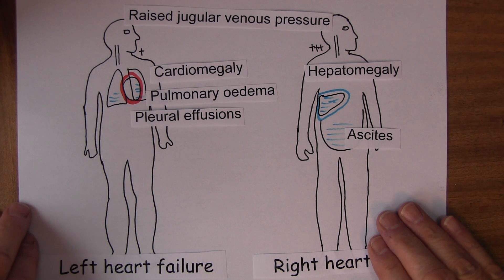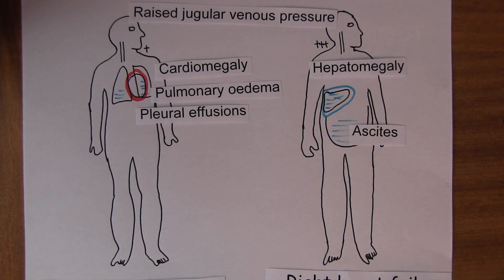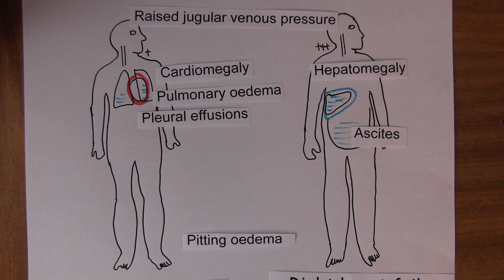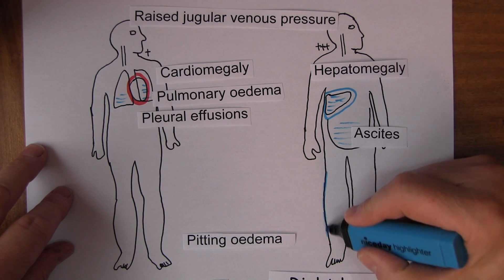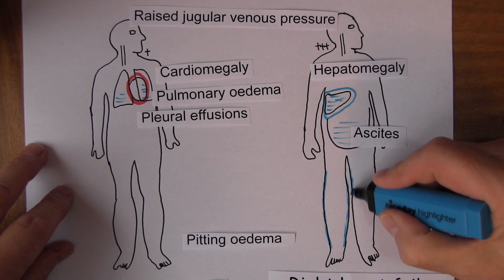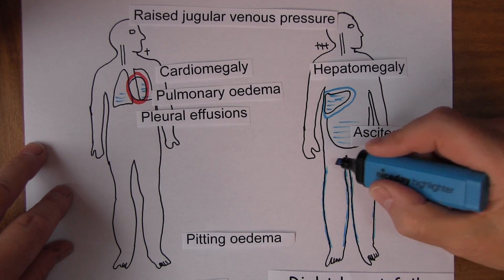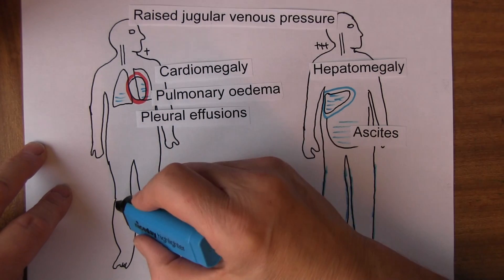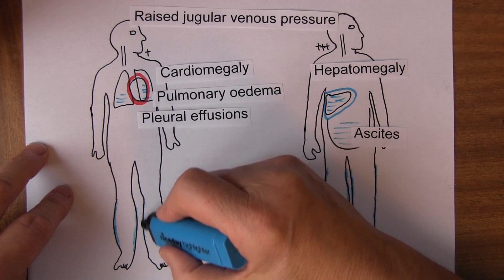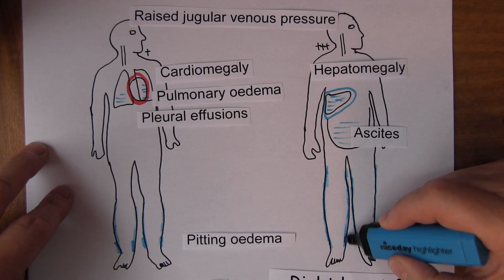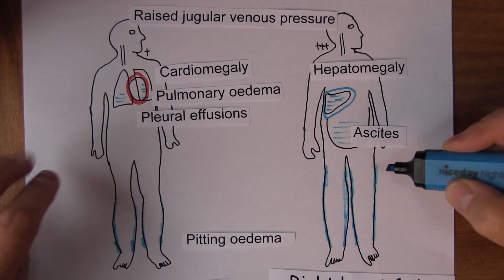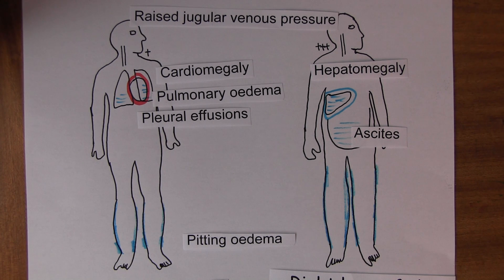A classic feature in heart failure is pitting oedema — when we press, a finger mark is left wherever we've pressed. In right heart failure the legs can become very swollen because of the back pressure in the systemic veins; indeed the legs can swell all the way up with pitting oedema. We do get pitting oedema in predominantly left heart failure as well, but it will be less pronounced and probably affecting more the ankle region, whereas in right heart failure it can affect more of the legs. The oedema is dependent — it depends on gravity — so if the patient is lying in bed the fluid can accumulate in the sacral areas.